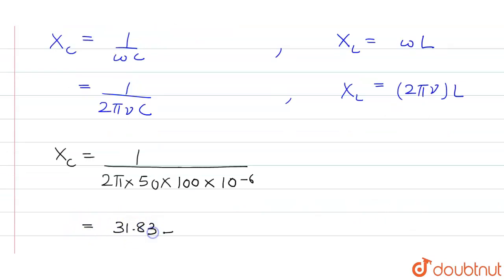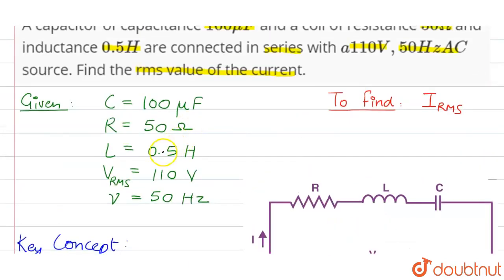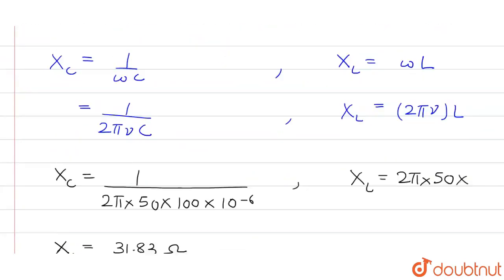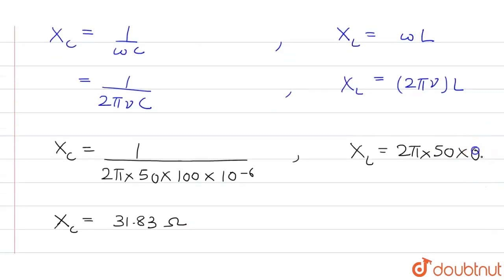So this is our capacitive reactance. Now we will find the inductive reactance X_L which is given as 2πν, that is 50, and L the inductance is given as 0.5 henry, so we will substitute the value as 0.5. Now on solving we will get X_L as 157.08 ohms.